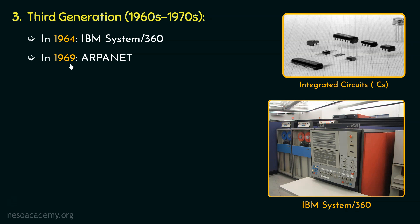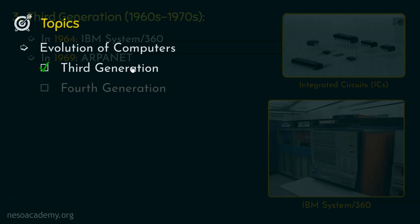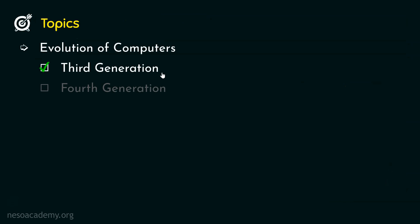Then in 1969, United States Department of Defense established the first wide-area packet-switch network called ARPANET, or Advanced Research Project Agency Network. It was also the first computer network to implement the TCP-IP protocol. Do remember, this network was not publicly accessible. So that was all about the third generation of computers.